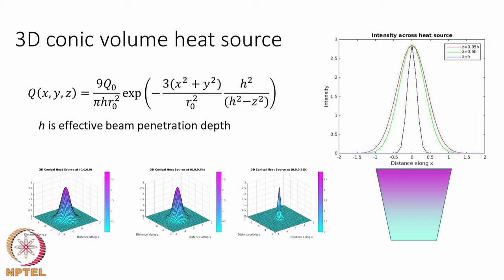A 3D conic volume heat source has been shown to be quite good in reproducing weld shapes. The conic heat source is essentially the Gaussian heat function multiplied by a factor which is not just a simple ratio but a square function. When you go from the top to the bottom of the keyhole, the intensity variation is much larger than in a cylindrical heat source. A conical heat source thus lowers the amount of heat distribution variation at the bottom of the sample compared to at the top.